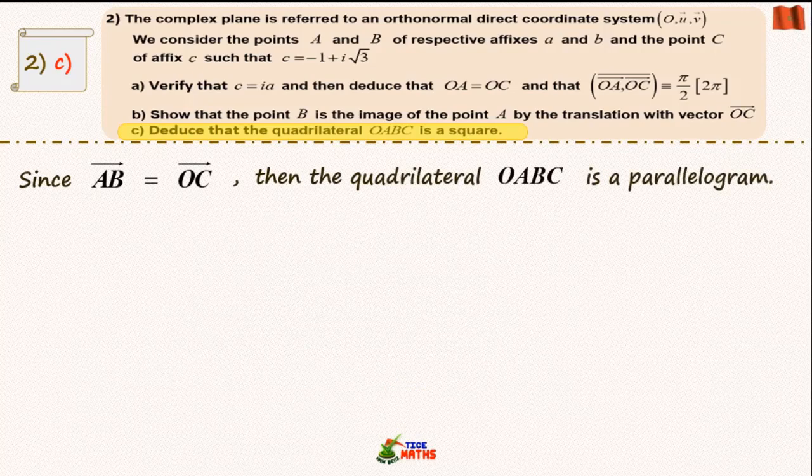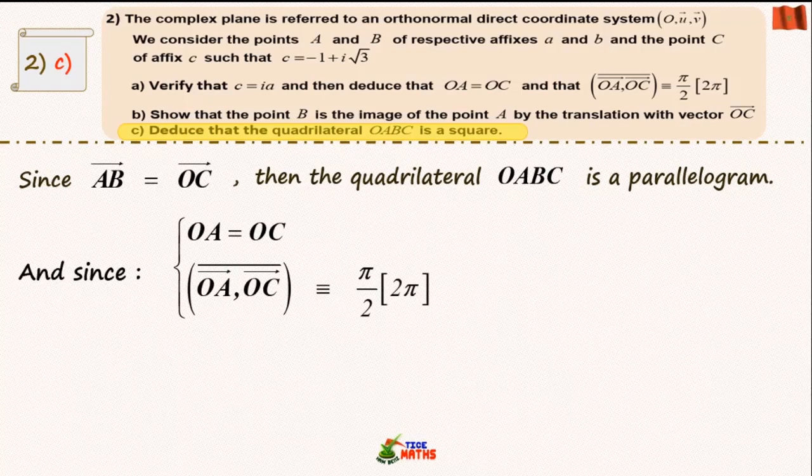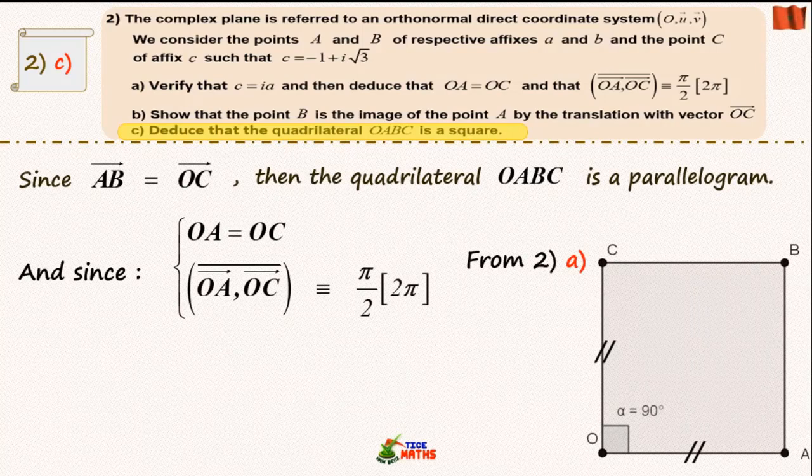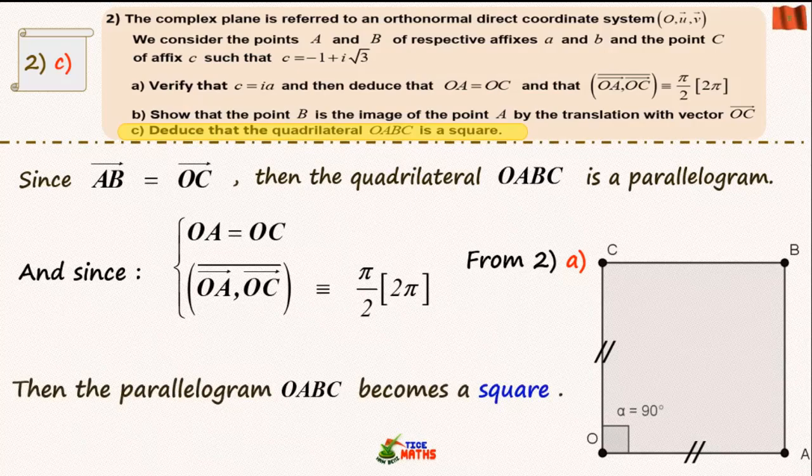From question 2a we deduce that the parallelogram OABC admits a right angle at the vertex O and the two sides of this right angle are equal, so we deduce that the parallelogram OABC is a square.